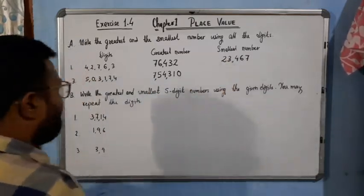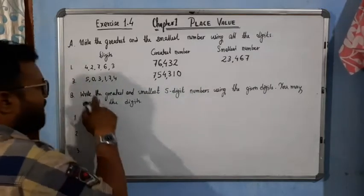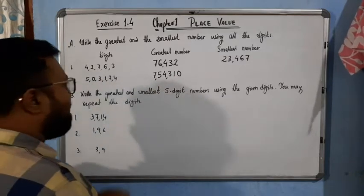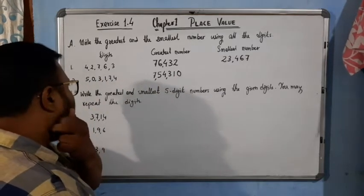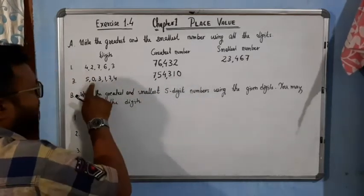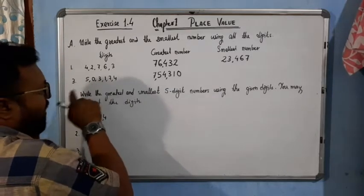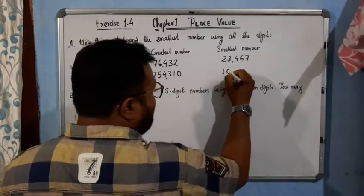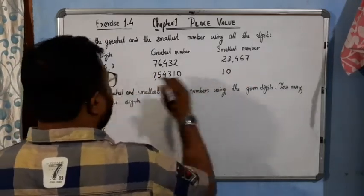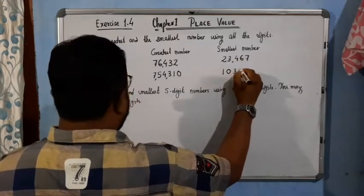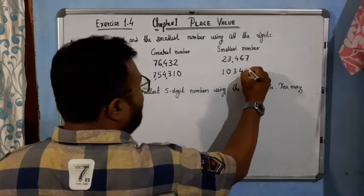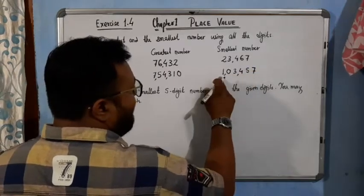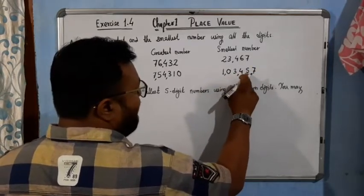Now for the smallest number: since we can't write 0 at the beginning of any number, 0 has no value at the start. So we write 1 first as the smallest non-zero digit, then place 0, then 3, then 4, then 5, then 7. So the smallest number is 1,03,457.